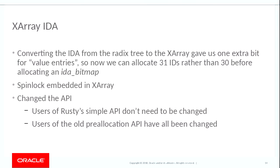We've all got gigabytes of memory on our phones, let alone our laptops — we don't notice these things anymore. It's only when people are trying to do IoT and small embedded things that saving hundreds of kilobytes becomes a real selling point. Later on I converted the radix tree to the xarray. We got an extra one bit, but more importantly we embedded a spin lock in the xarray, which let us change the API. Rusty's API had one global spin lock that everybody shared, whereas I now have one spin lock per IDA — a nice scalability improvement, though less interesting for embedded devices.